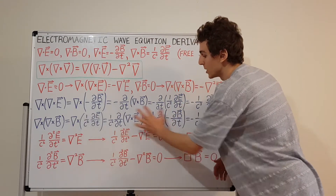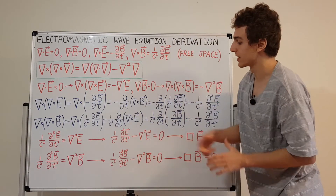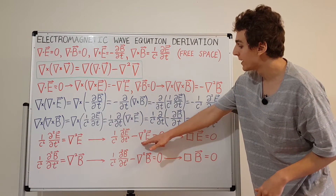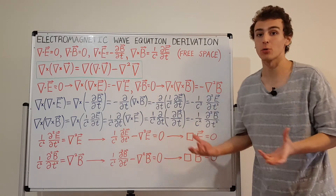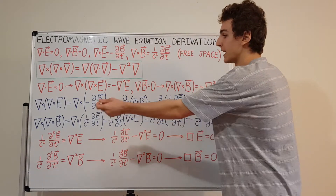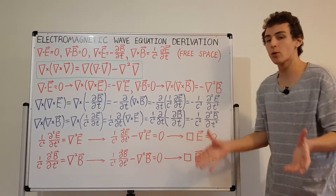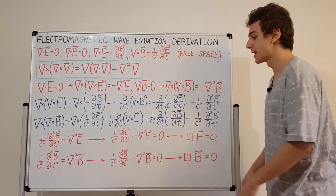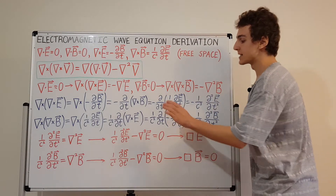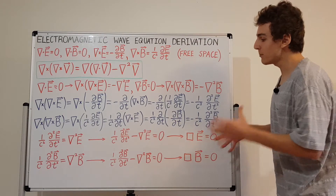Waves on a string satisfy this equation, but because a string is one-dimensional, they only have one second derivative with respect to a single spatial coordinate x. Over here we have three spatial coordinates — x, y, and z — and you can also express it in spherical or cylindrical coordinates. Time is treated somewhat like a spatial coordinate, but with a factor of 1 over c squared.